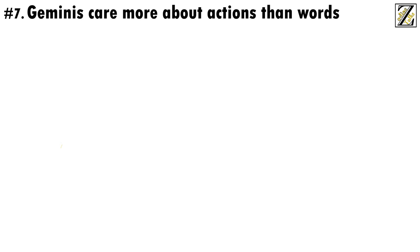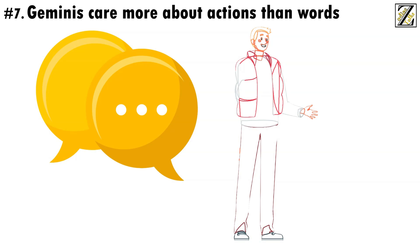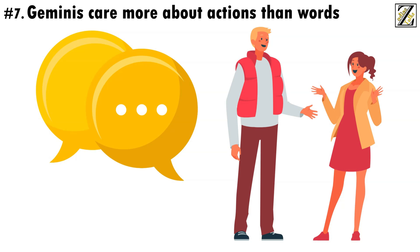Number 7, Geminis care more about actions than words. Talk is cheap, and Geminis know it, so they tend to look at actions and base their opinions and decisions on those. You can spin pretty tales and tell them all they want to hear, but Geminis won't fall for it. Unless you talk the talk and walk the walk, you won't be able to fool them.